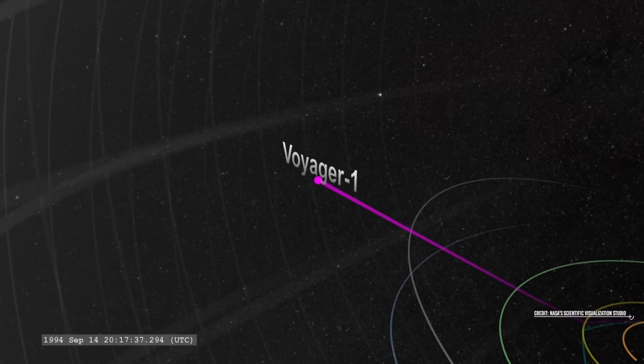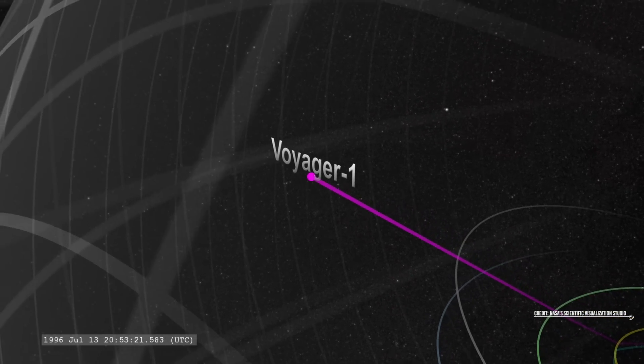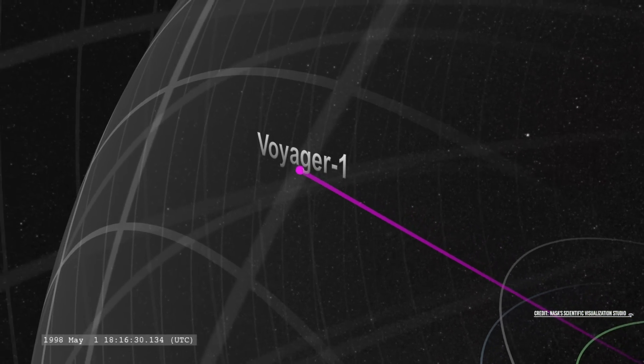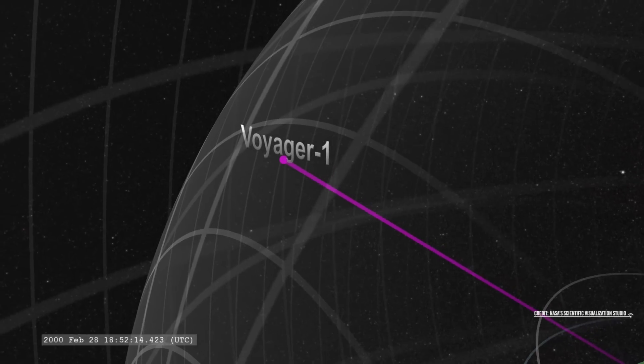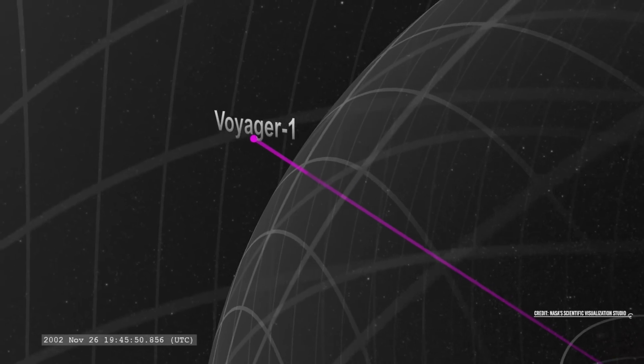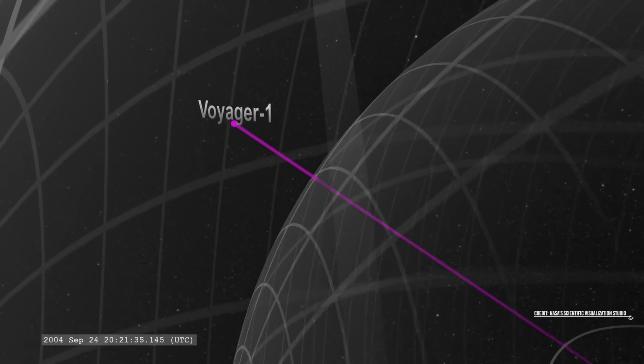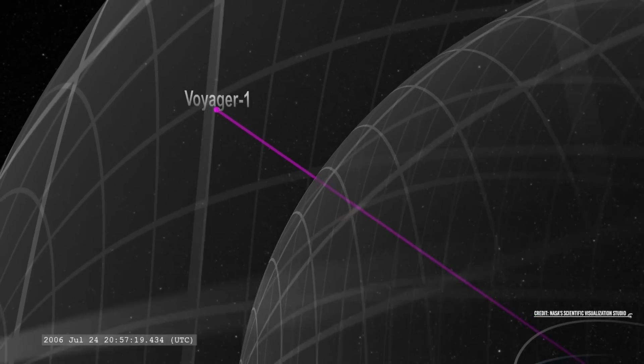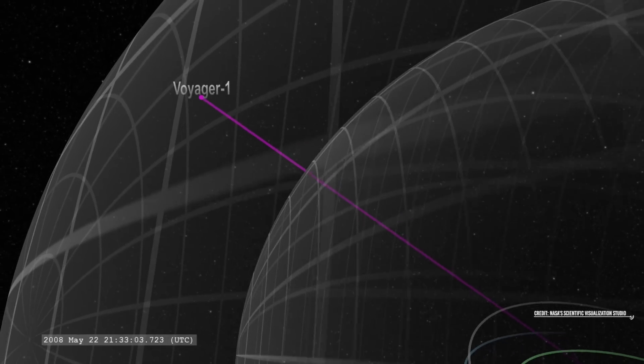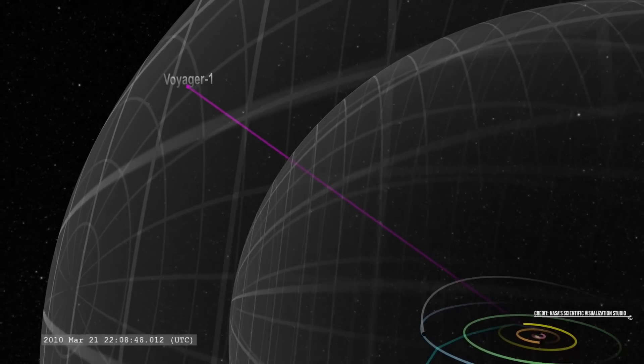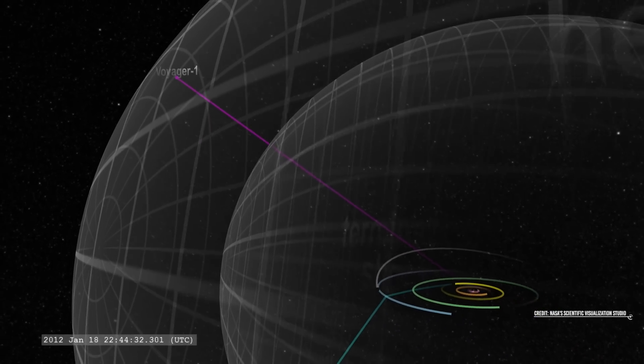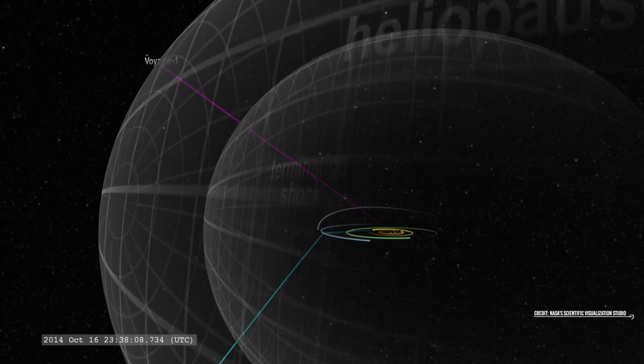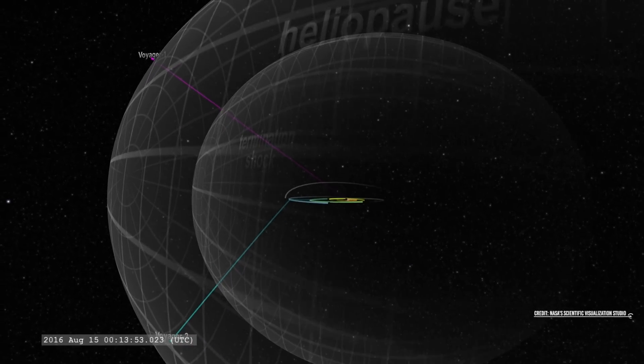Until that moment, it was announced that both space exploration probes had managed to leave our solar system. But that changed after the data that the ship sent us from the ends of space were analyzed. Currently, both spacecraft are more than 15,000 million kilometers away from the sun. But it is a consensus that they have not yet left the solar system. And this is because the solar atmosphere is much larger than we thought.